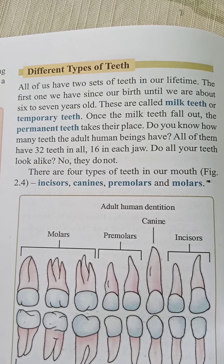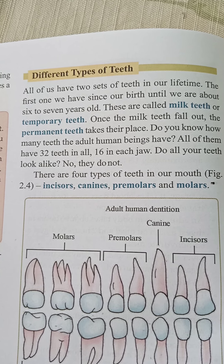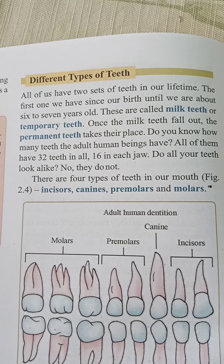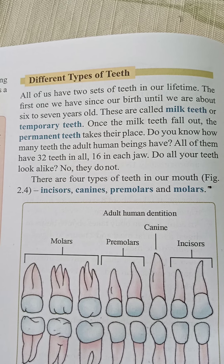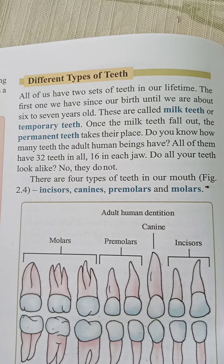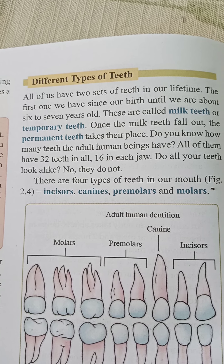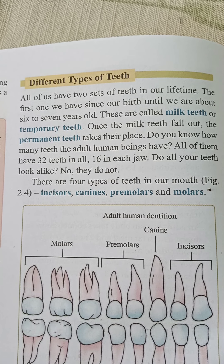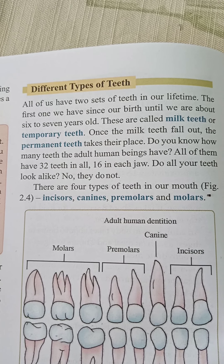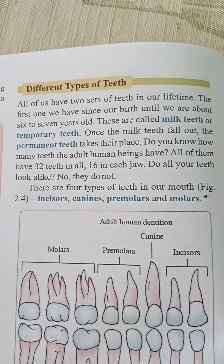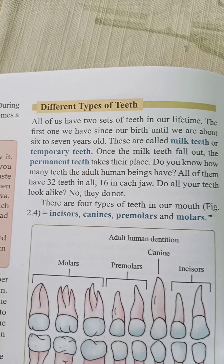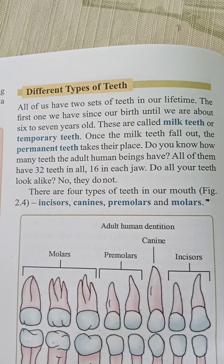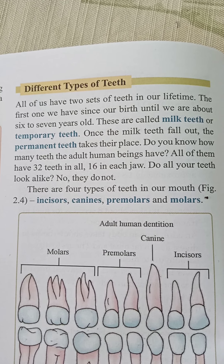Do you know how many teeth an adult human being has? All adults have 32 teeth in total — 32 teeth in each jaw.